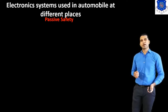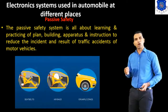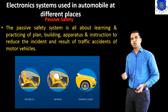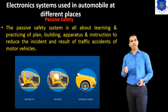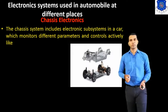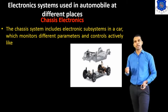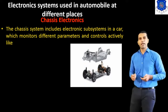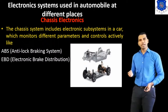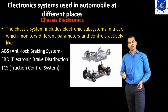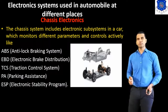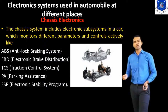Next one is the passive safety system. The passive safety system is all about learning and practicing plans, building, apparatus, and instructions to reduce incidents and the result of traffic accidents in motor vehicles. Next is the chassis electronics. The chassis systems include electronic subsystems in a car that monitor different parameters and control activities like: ABS — Anti-lock Braking System; EBD — Electronic Brake Distribution; TCS — Traction Control System; PA — Parking Assistance; and ESP — Electronic Stability Program.